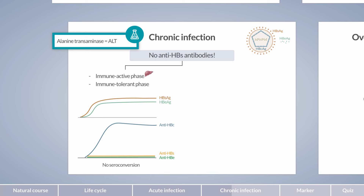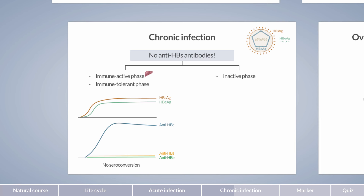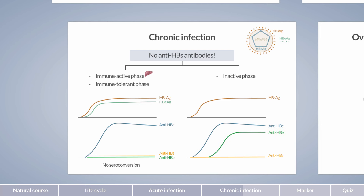Besides these two phases, there is a third chronic form: the inactive phase. Like the other two phases, there is an insufficient immune response — that is, protective anti-HBs antibodies are absent. The patient remains HBs antigen positive and, although the disease is inactive, the patient is in principle infectious. Consistent with the other two chronic forms, anti-HBc antibodies are also detectable in the inactive carrier state. However, in contrast to the other two forms of chronic hepatitis B infection, anti-HBe antibodies are formed.